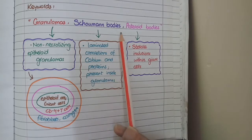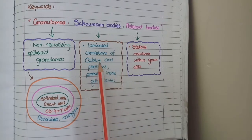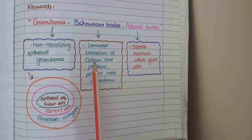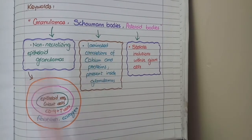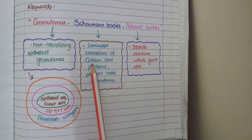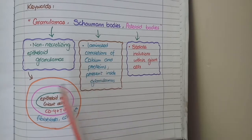The second element is Schaumann bodies, which are structures made of proteins and calcium in a laminated form. These concretions are present inside the granulomas — they are laminated or layer-like concretions of calcium and proteins.